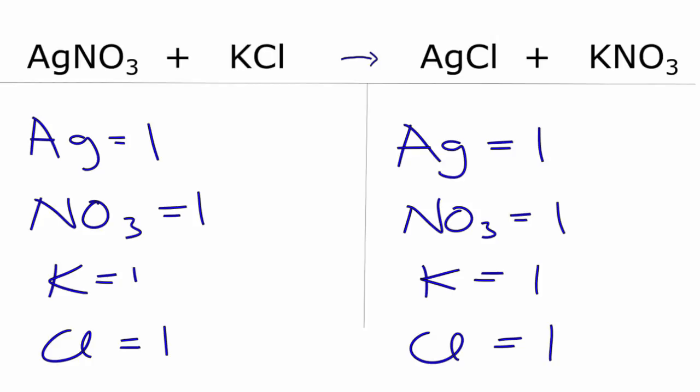It turns out that this equation is actually already balanced. We have coefficients of one, one, one, one. So that's the balanced equation for silver nitrate plus potassium chloride yields silver chloride and potassium nitrate. This is Dr. B, and thanks for watching.